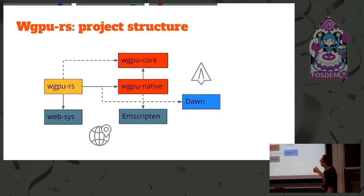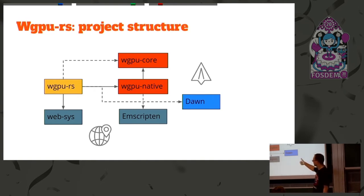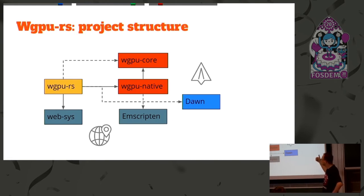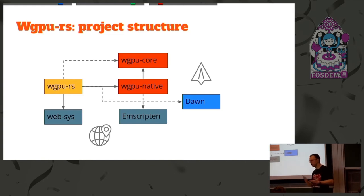This is the structure of WGPU. The path we have now goes from WGPU-RS — our Rust wrapper — to the native, which is a C API implementation, that goes into core, which goes into GFX. What we will have is that WGPU-RS will call WebSys and allow you to target the web directly without going through Emscripten. Alternatively, you can use Emscripten to target the web, or use the shared path between WGPU-Native and DAWN, because they share the same C headers — and you can run on top of Google's implementation.